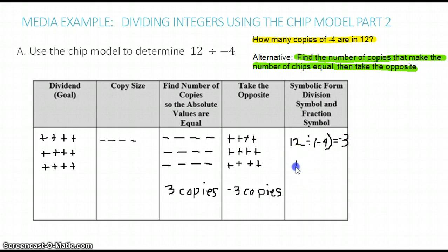As a fraction, we would write 12 with negative 4 in the denominator or bottom, and this equals negative 3. So 12 divided by negative 4 equals negative 3.